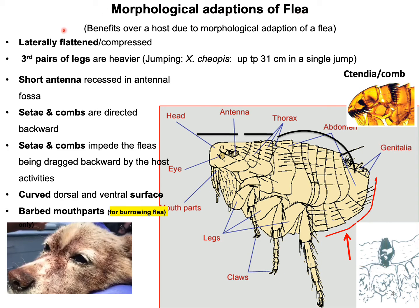The morphological adaptations of the flea provide benefits over the host. The first adaptation is that the body is laterally compressed, allowing the flea to move through the body coat of the animal very easily. The second is that the third pair of legs is heavier compared to the first and second pair, allowing the flea to jump from the host to the environment. In the case of Xenopsylla cheopis, fleas can jump over 31 centimeters in a single leap.